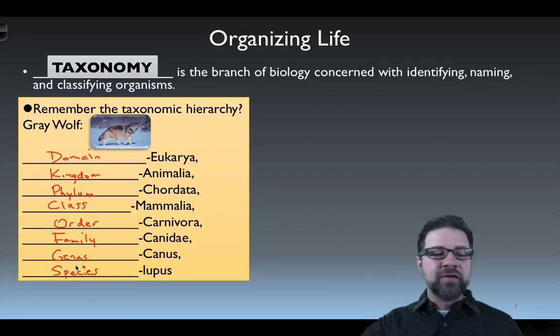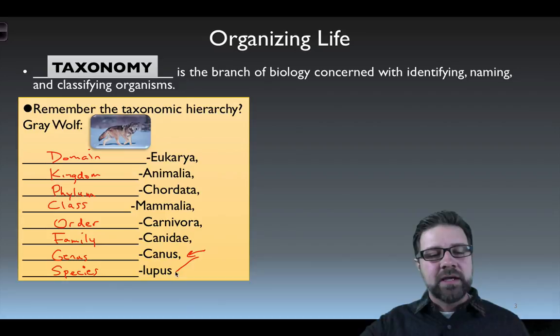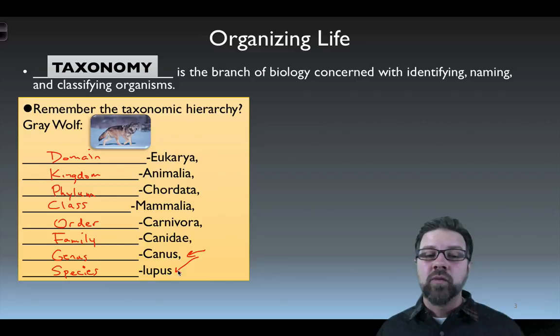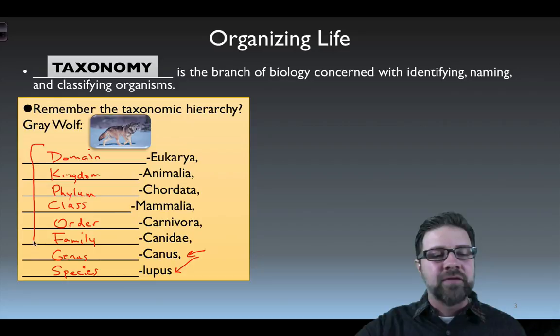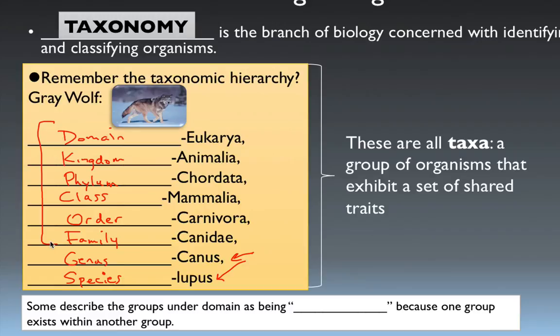This list goes from very general characteristics down to very detailed characteristics. By the time we get down to the genus and species levels, we've basically keyed out our organism. The gray wolf would be called Canis lupus for short, but all of these other levels are part of its name as well in scientific taxonomy. All of those levels are collectively known as taxa — a group of organisms that share a set of shared traits.